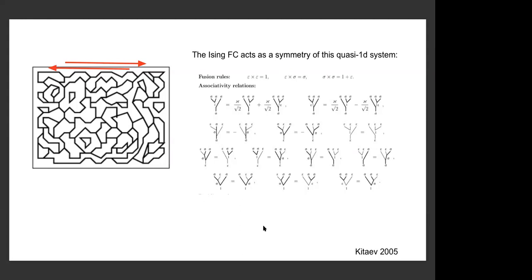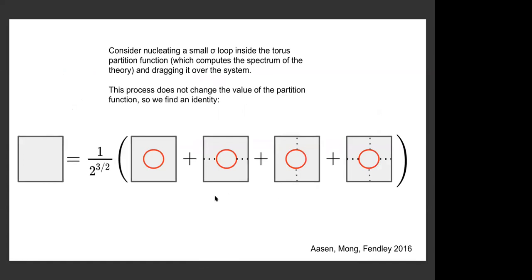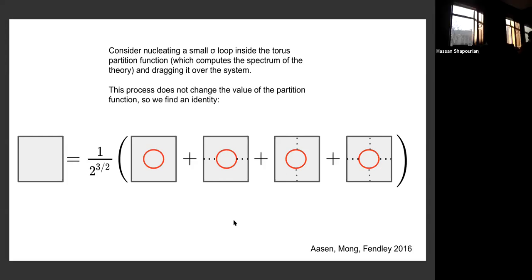The Ising CFT realizes one of these categories as its self-duality; the other is realized by SU(2) level two. The classification of gapped phases would be different — for Z2 with an anomaly, for instance, there would be no symmetric phase. Ryan did use the associativity relation — the crossing relation — when proving that the 1+1D theory with this category is self-dual under Z2 gauging.